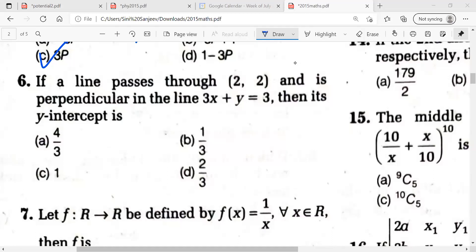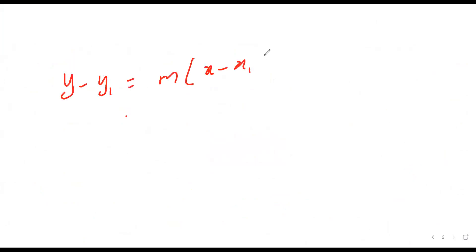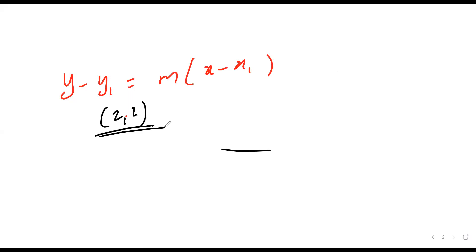Coming to the sixth question. The basic formula is y - y₁ = m(x - x₁). It's a very simple question. They clearly give the point (2, 2), so x₁ = 2, y₁ = 2. The given line is 3x + y = 3, so the slope m = -3... wait, rewriting y = -3x + 3, the slope is -3. But a parallel line has the same slope.